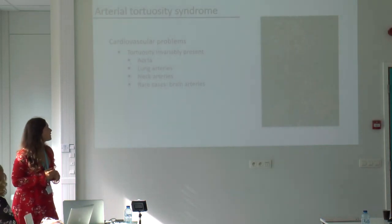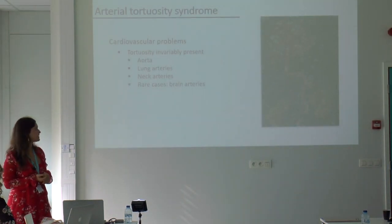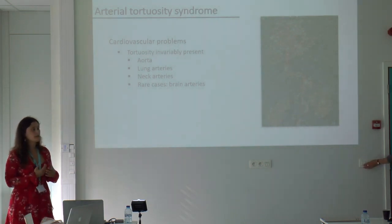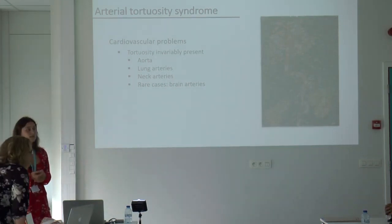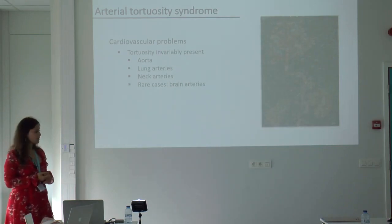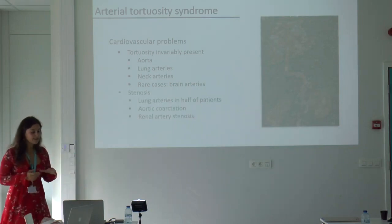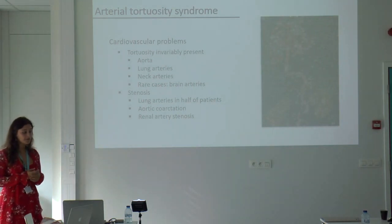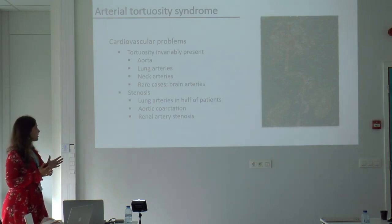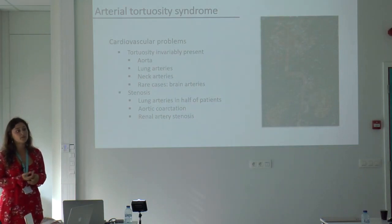Very important are the cardiovascular problems. Tortuosity is present in all patients and mainly affects the aorta, the main artery of the body. It also can affect every other middle or large-sized artery, such as the lung arteries or the neck arteries, and in rare cases even the brain arteries can be affected. It can be associated with stenosis — almost half of the patients had a stenosis, a narrowing of their lung arteries. We also found aortic coarctation and in some patients a renal artery stenosis, which is important because it can be associated with hypertension.